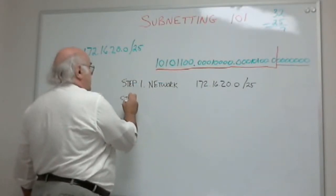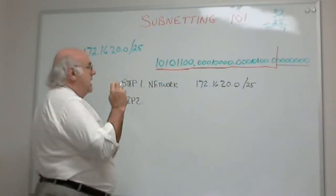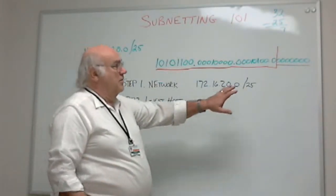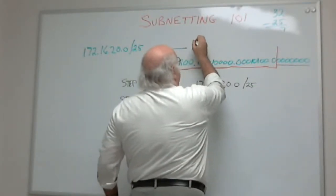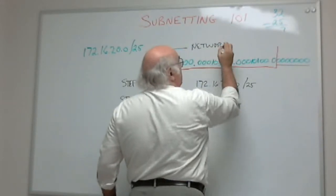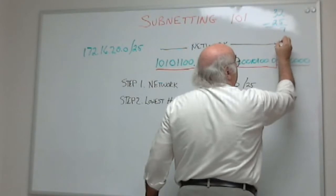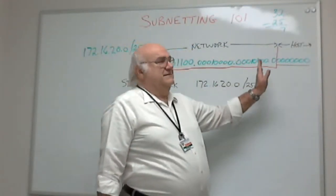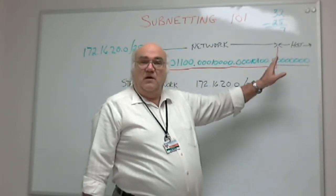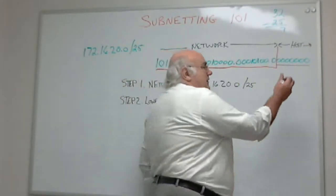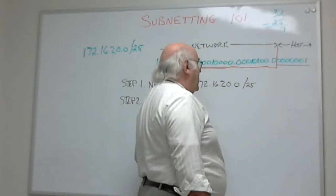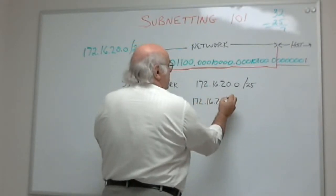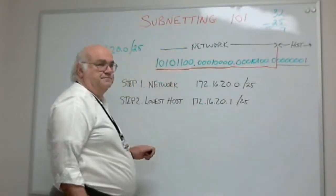Step two. I need to calculate my lowest host address. Again, where are my host bits? These are my host bits. These are my network bits. So if I want to take zero, I can't use zero because that's part of the network address. If I want to make my first host address, all I have to do is add one. If I change this last bit to one, I've now got my lowest host address. My lowest host address in this case is 172.16.20.1 slash 25.